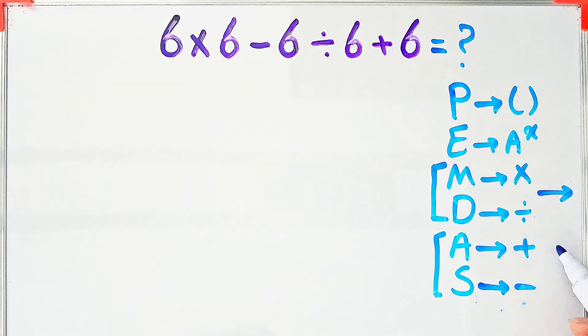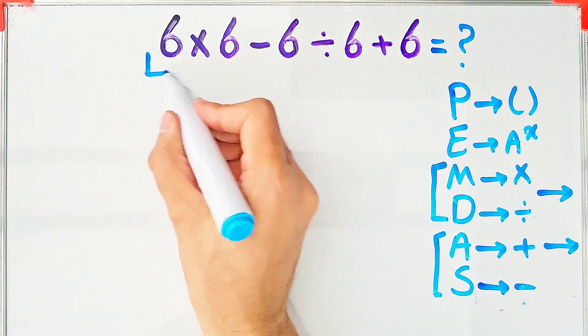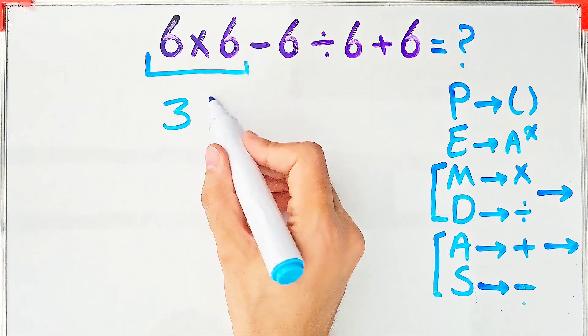In this question, first we do the multiplication: 6 times 6 equals 36.